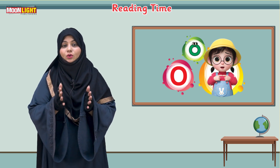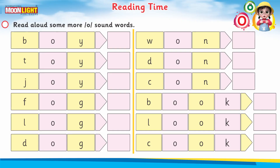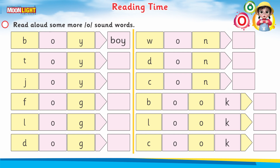Look here. The first word — read out the spellings: B-O-Y, this is 'boy.' Here you can listen — the sound of O is 'oy.' It's 'boy,' not 'boh.' The second one is T-O-Y, 'toy.' And the third one is J-O-Y, 'joy.'